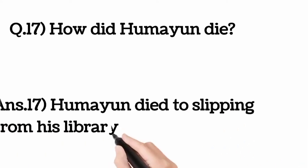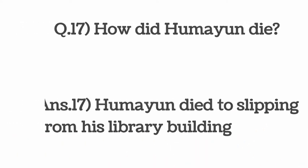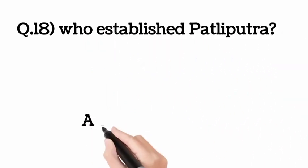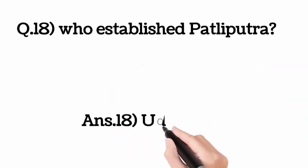Humayun died by slipping from his library building. Question number 18: Who established Pataliputra? Answer: Udayan.